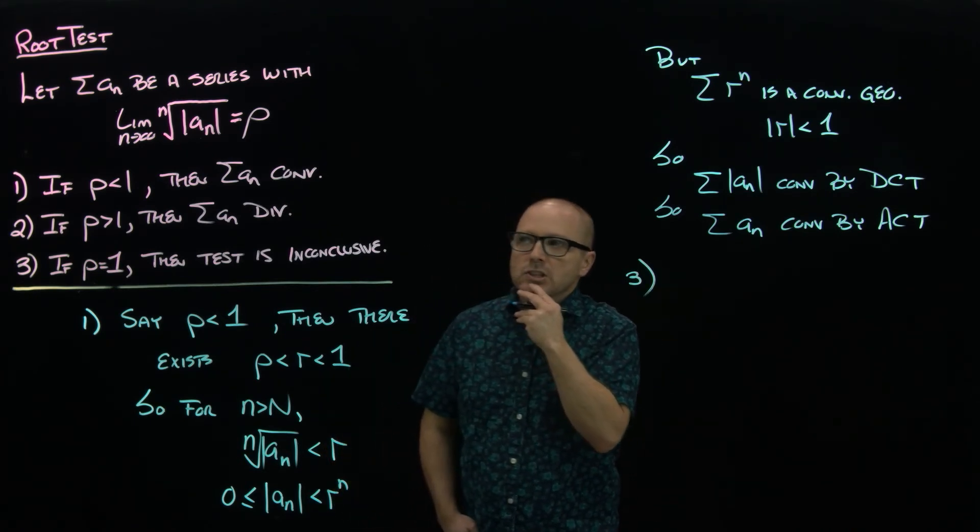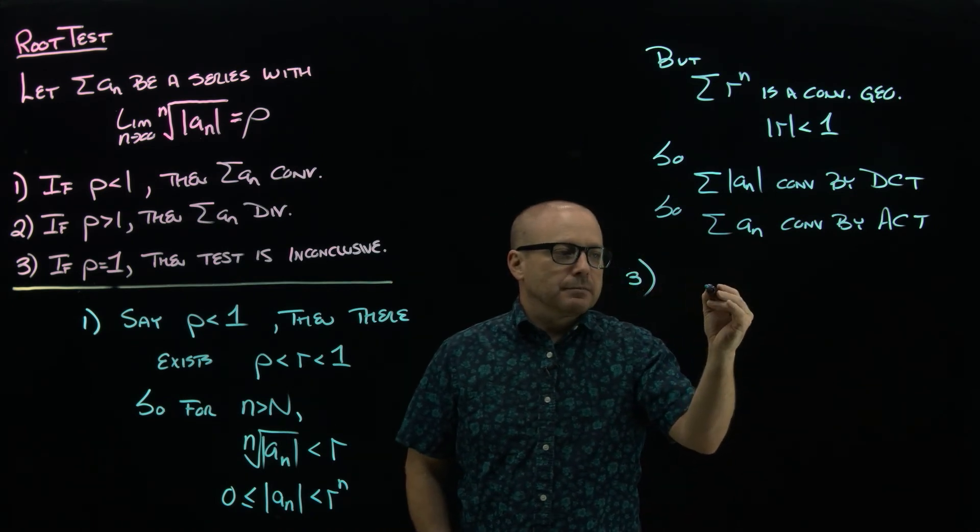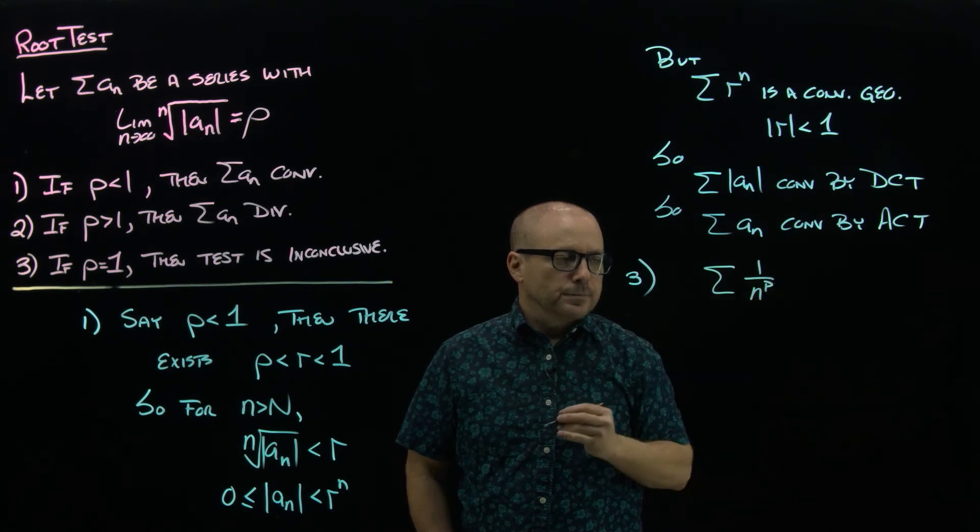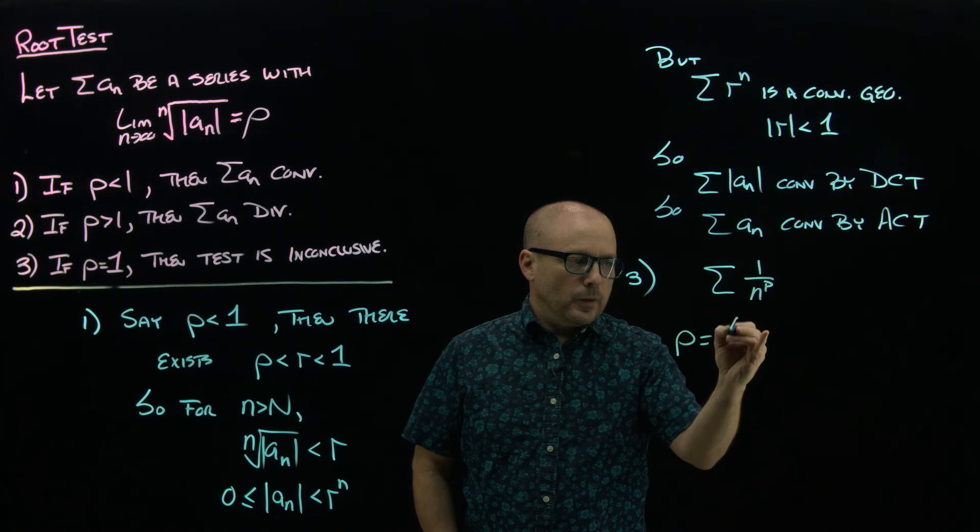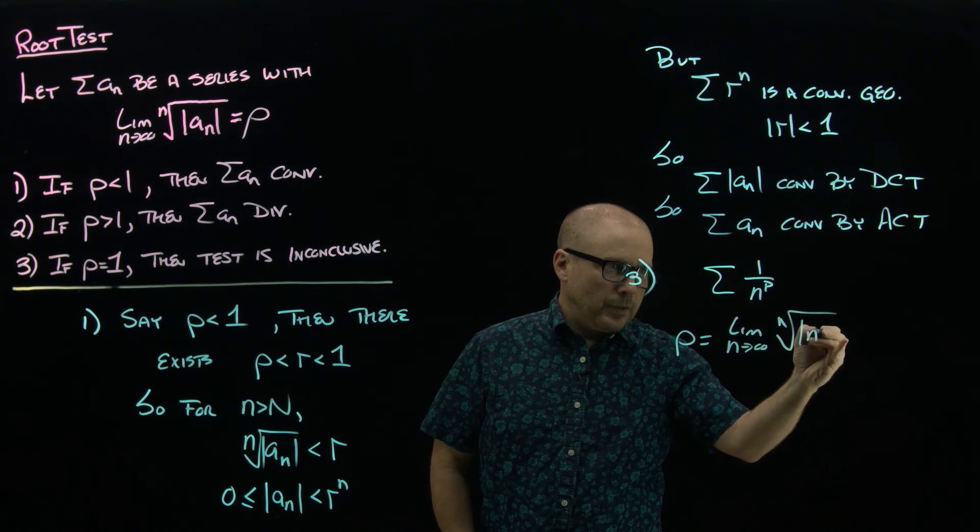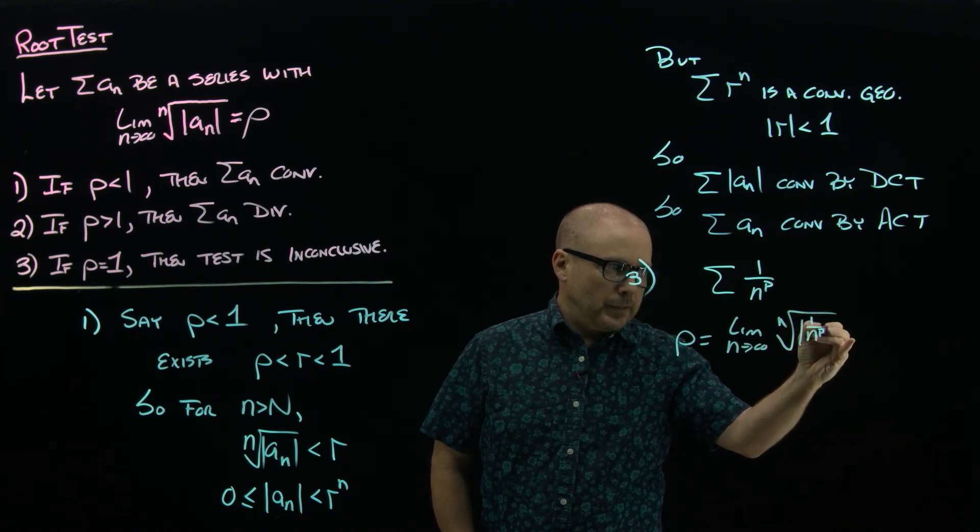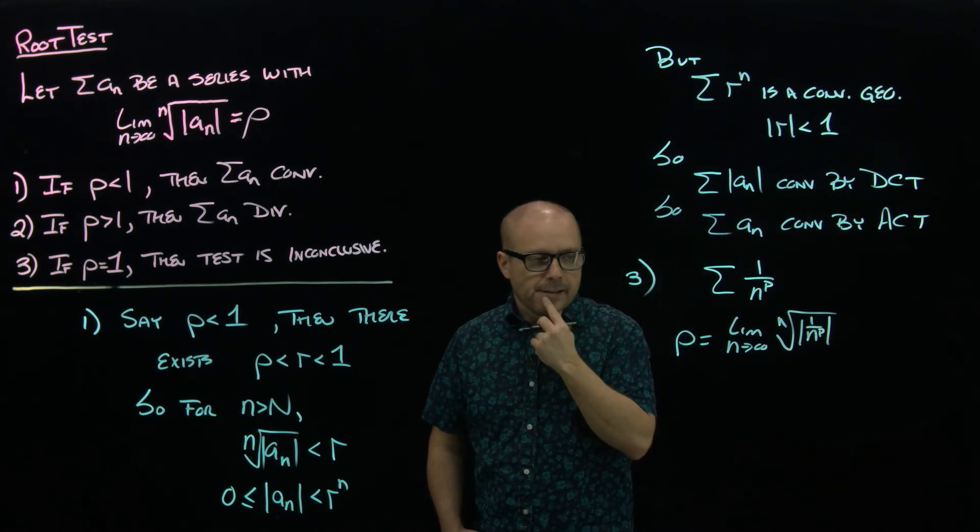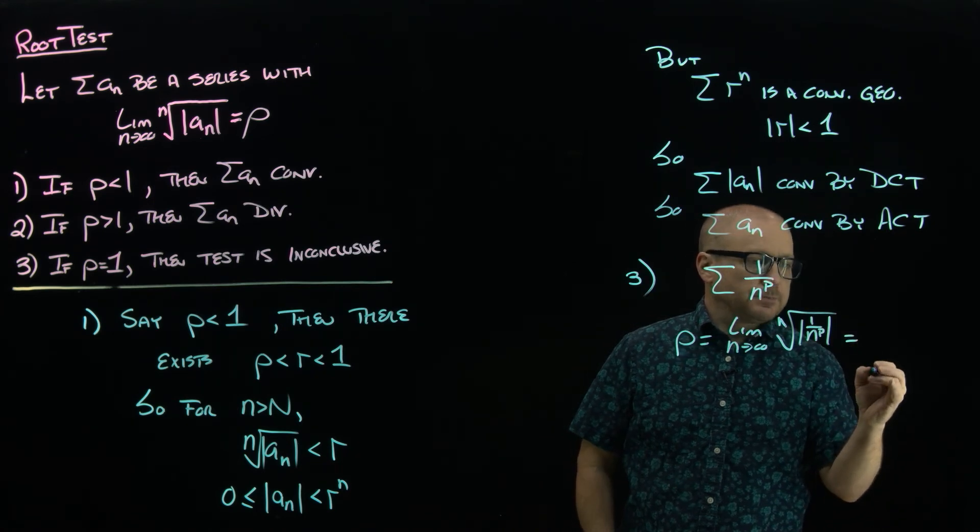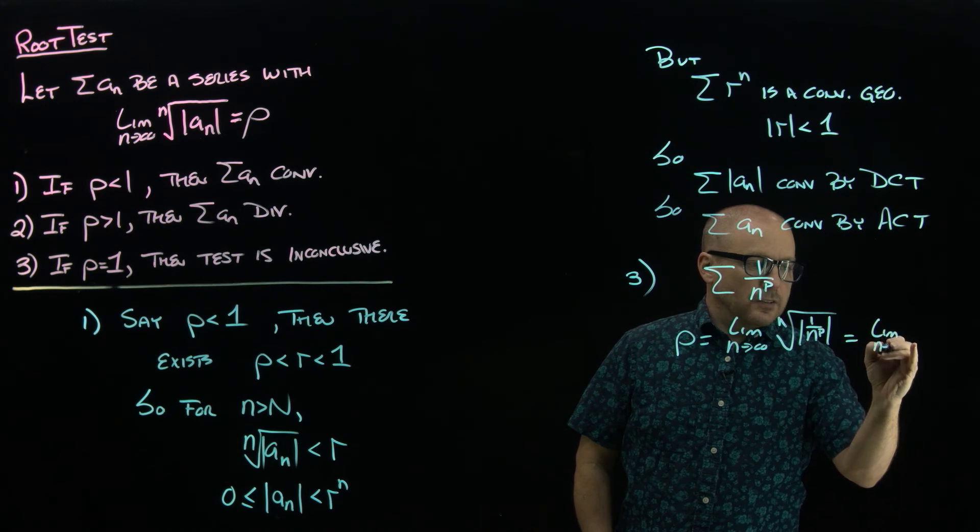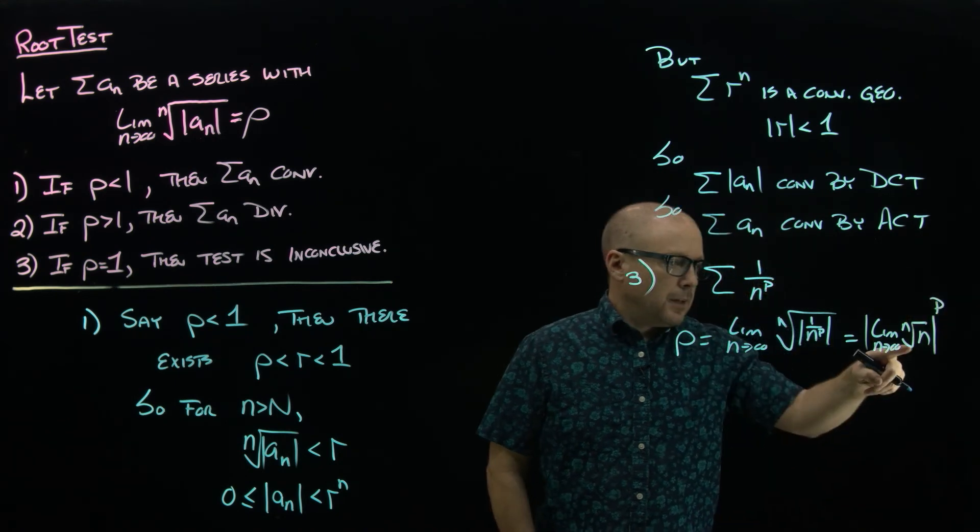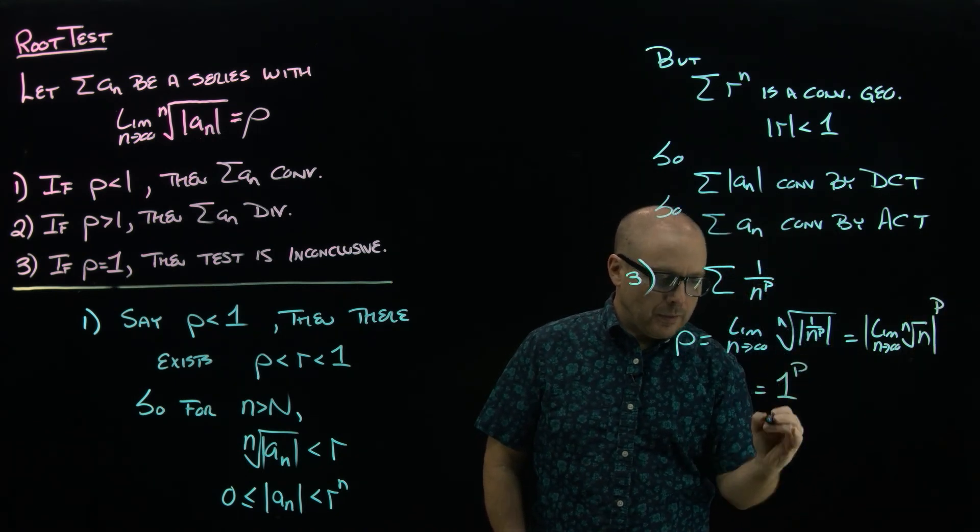Well, let's just look at what happens to any p-series. If you go to calculate ρ—the nth root of the absolute value of one over n to the p—you can interchange the root and the power there, so you're looking at the limit as n goes to infinity of the nth root of n, absolute value to the p. But that is one to the p, right, by theorem five.